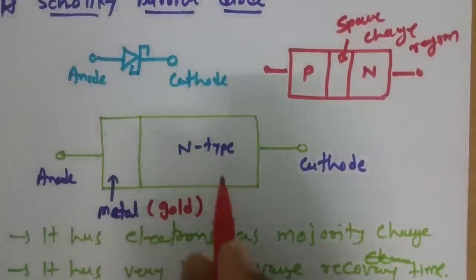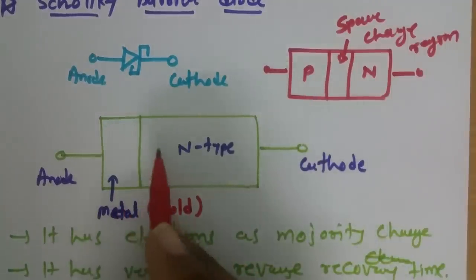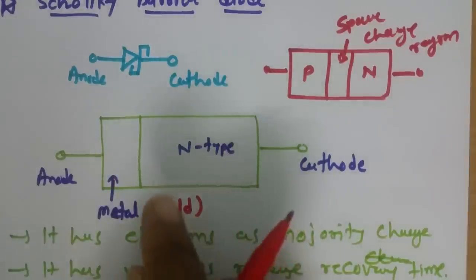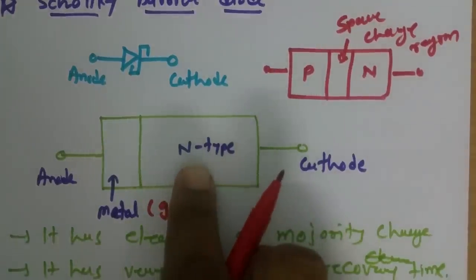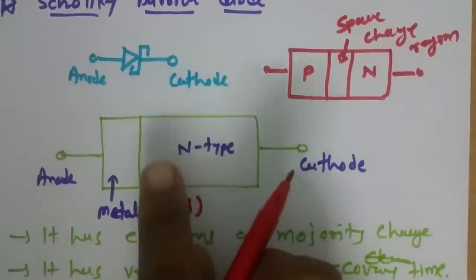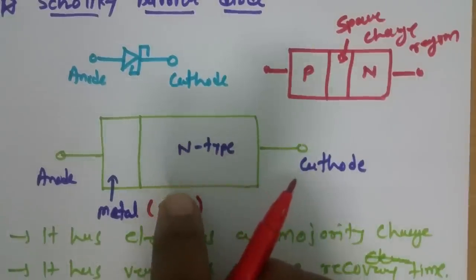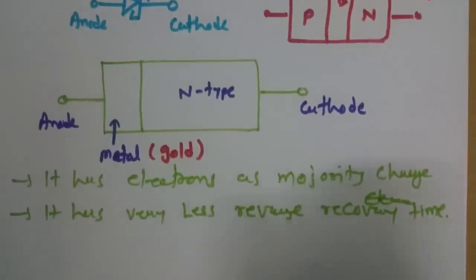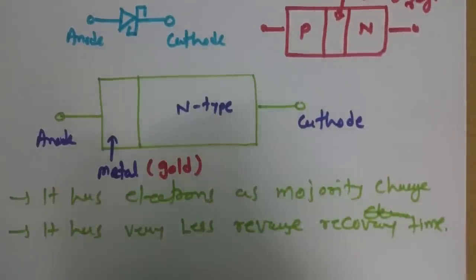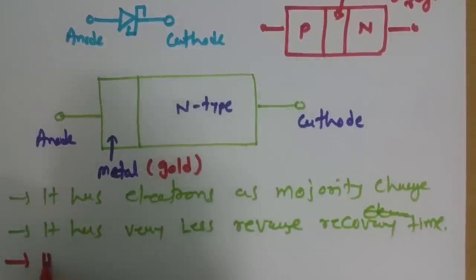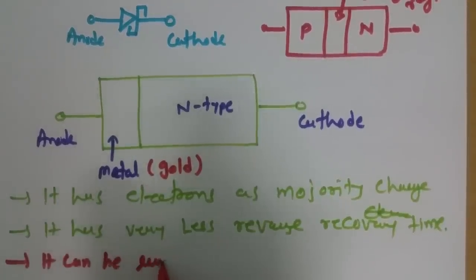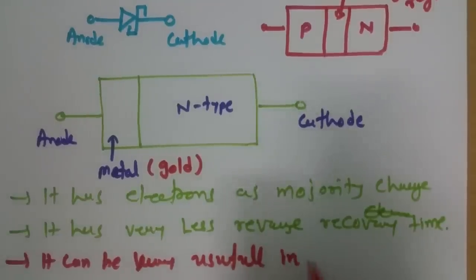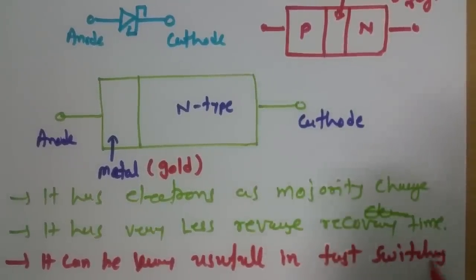When we talk about the Schottky Barrier Diode, it does not have any space charge region. So when we turn it on, there is a flow of electrons as majority carriers, and when we reverse bias it, there is no space charge region — no extra effort is required to move charge carriers. That is why it has very less reverse recovery time, making it very useful in fast switching devices.